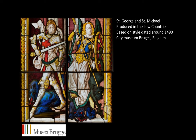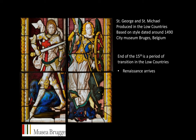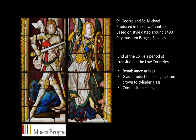The panel is part of a very beautiful ensemble that depicts St. George and St. Michael. It was probably produced for the chapel of the Guild of St. Luke in Bruges and is now part of the collection of the City Museum in Bruges. The panels were dated around 1490, and the end of the 15th century is a period of transition in the Low Countries. Renaissance arrives, which means stained glass panels start to look different stylistically. There is also a shift in how glass is blown, from crown to cylinder technique, and the composition changes — the potash type is abandoned in favor of what is often called high-lime, low-alkali glass.